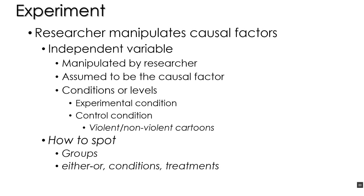The experimenter manipulates causal factors. By manipulation, we mean that the researcher controls which subject receives what type of causal factor being investigated. Usually, these causal factors are contained in the independent variable. The independent variable is a variable that differs across different levels and is manipulated by the researcher. It is assumed to be the causal factor — that is, it's causing some type of behavior.